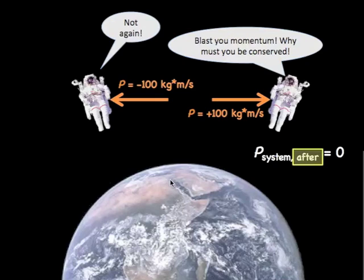Let's just take note that if I accidentally was looking at the wrong system — let's say just the left astronaut — before the pushing event, the left astronaut, if stationary, had a momentum of zero. And now, after the pushing event, the momentum is negative 100 kilogram meters per second. You can see that momentum was not conserved, but again, that's because we were not looking at a closed system.